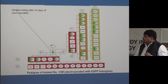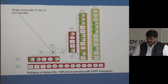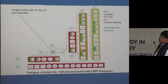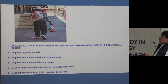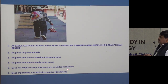We successfully produced transgenic mice and this paper was published in Nature Methods. The take-home message is that we have generated an easily adaptable technique for rapidly generating humanized disease models. It requires very few animals, less time, less infrastructure — no costly 2-crore setup or skilled embryo manipulation. Most importantly, it is ethically superior: females do not have to be killed to take out eggs.